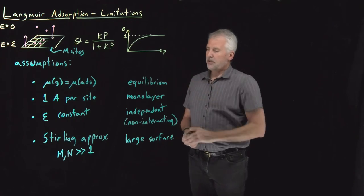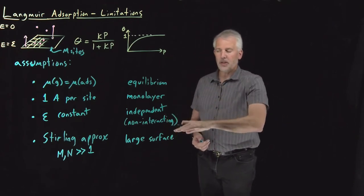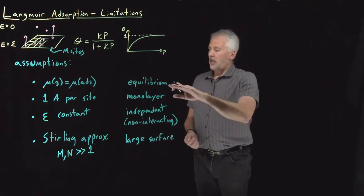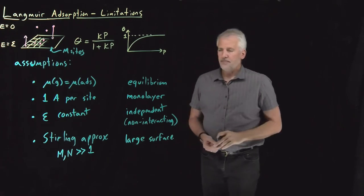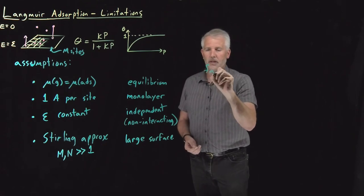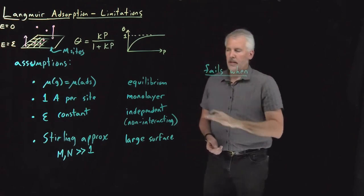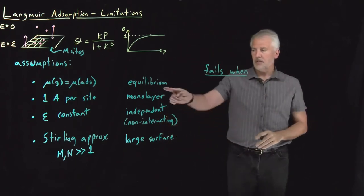So these are the approximations we've made. We can ask ourselves what are the conditions we might expect those approximations to fail, to fall apart. So I'll run through those one at a time. The equilibrium approximation can fall apart. So let me make another column here.